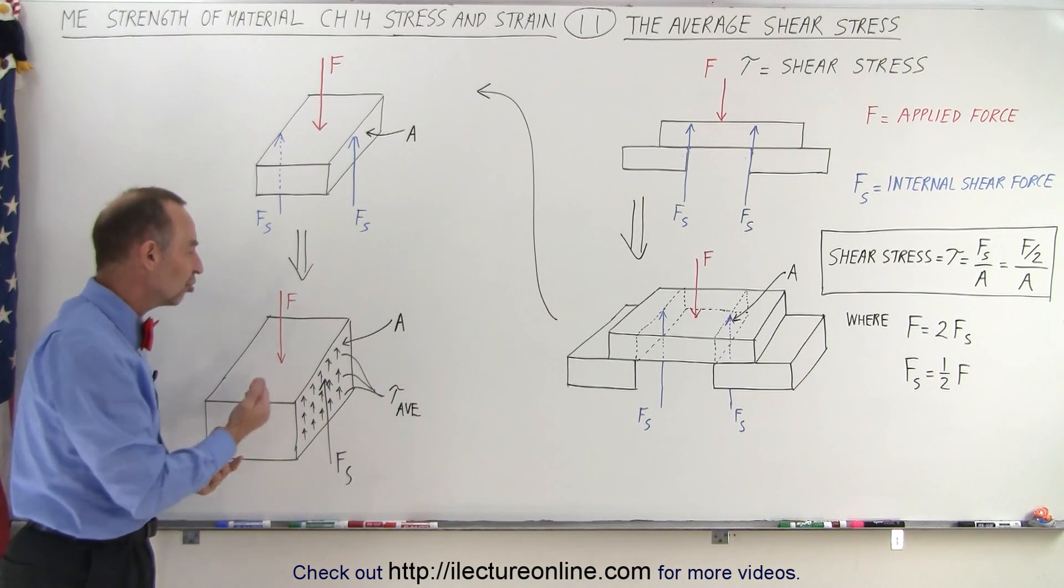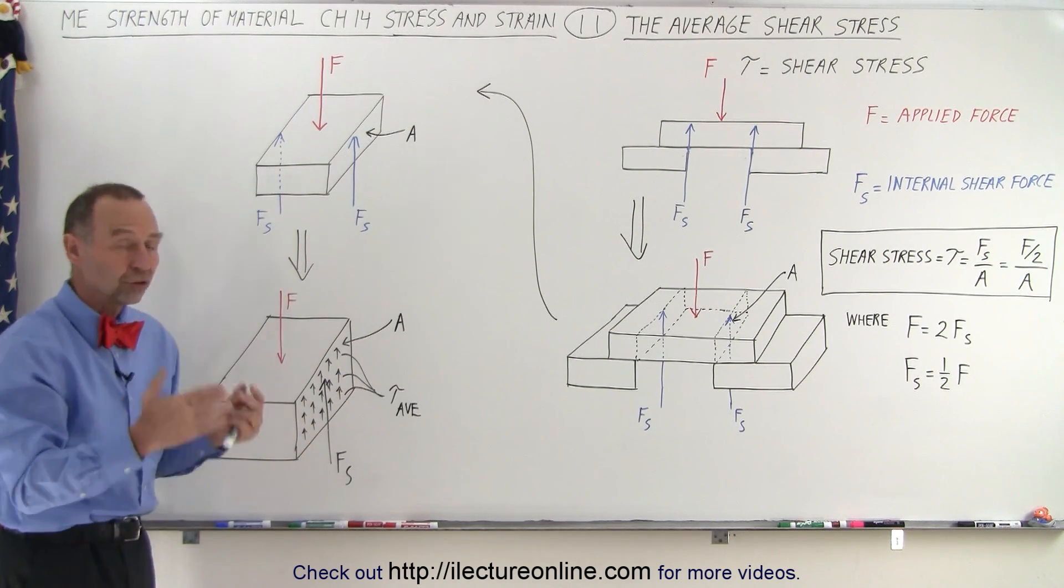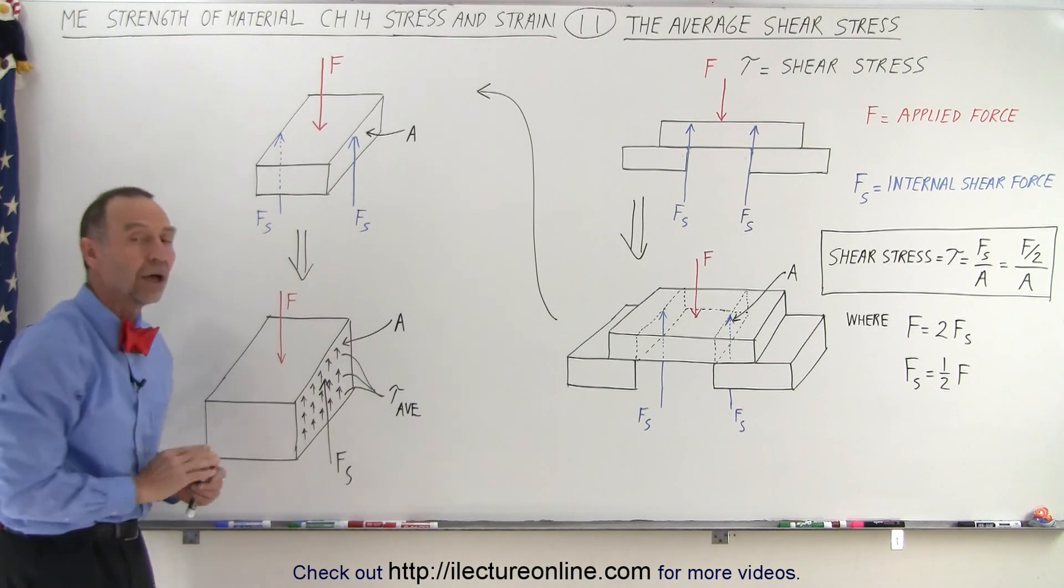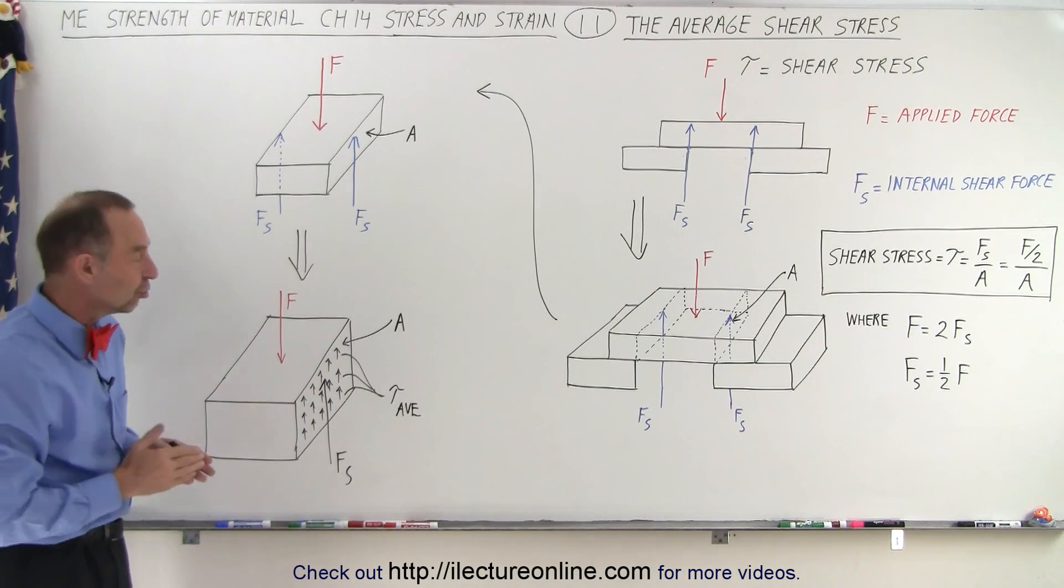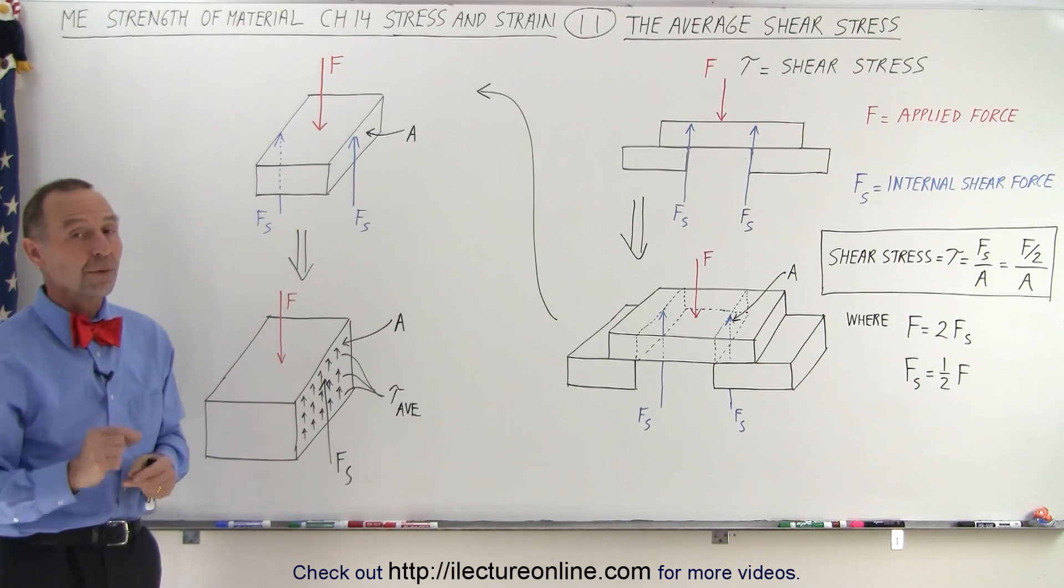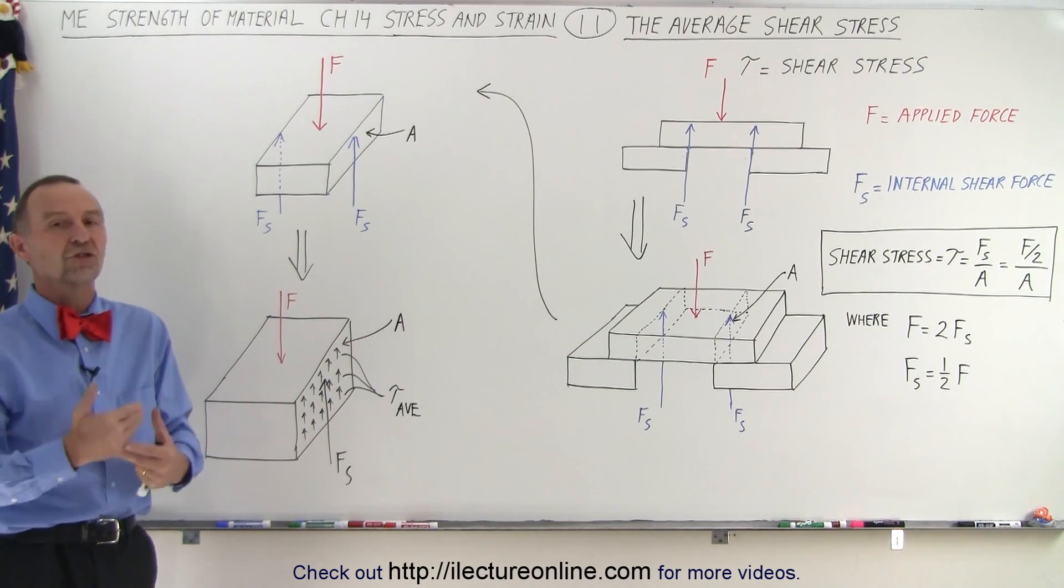So the average shear stress is simply the total shear force divided by the total area, then assuming that the total shear force is the same distributed everywhere equally along that imaginary edge or the imaginary side of that part of the block. And that's what we mean by the shear stress, or in this case, the average shear stress.